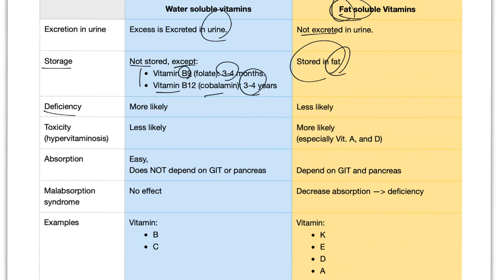Deficiency of water-soluble vitamin is more likely because they get lost in the urine all day long. But it's less likely for fat-soluble vitamins because they are stored in the fat. If deficiency is more likely, therefore toxicity is less likely. It's called common sense. Two sides of the same coin. If deficiency is less likely, toxicity is more likely, especially vitamin A toxicity.